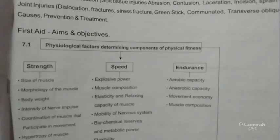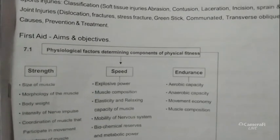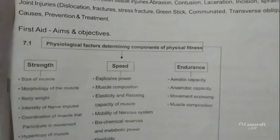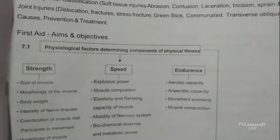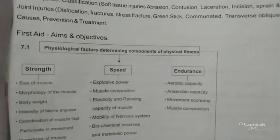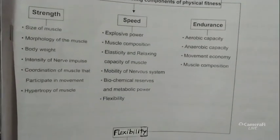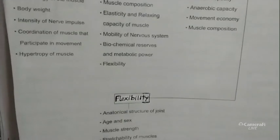Starting with section 7.1, first aid aims and objectives. Physiological factors determining components of physical fitness have been divided into four parts: strength, speed, endurance, and flexibility.